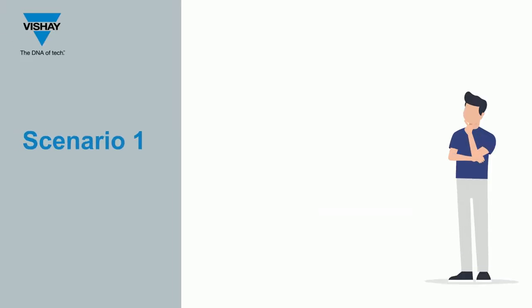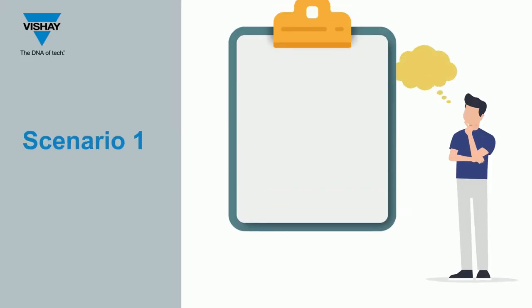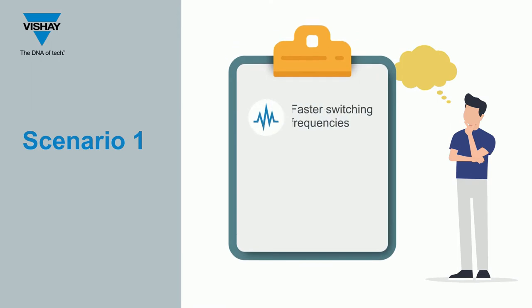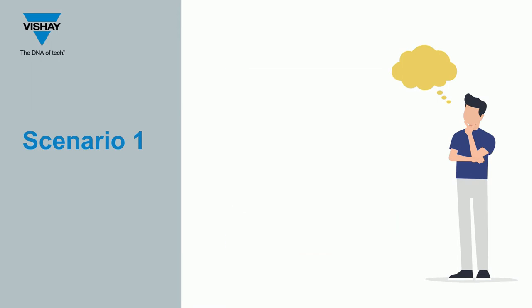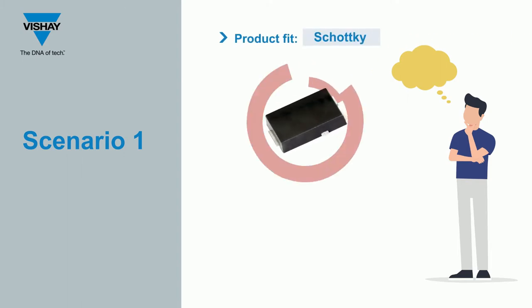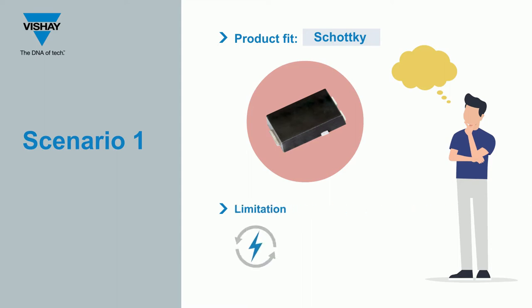When a diode is required that supports faster switching frequencies within a limited budget, a Schottky device with lower power consumption is the right product fit. However, the reverse voltage of this diode is limited to 200 volts.